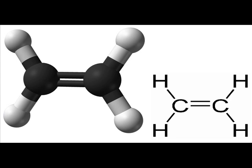Major intermediates from the halogenation and hydrohalogenation of ethylene include ethylene dichloride, ethyl chloride, and ethylene dibromide. Some products in this group are polyvinyl chloride, trichloroethylene, perchloroethylene, methylchloroform, polyvinylidene chloride and copolymers.